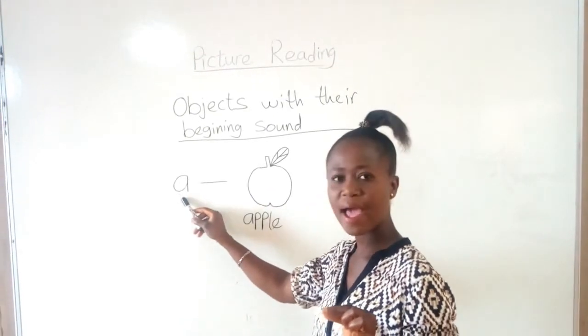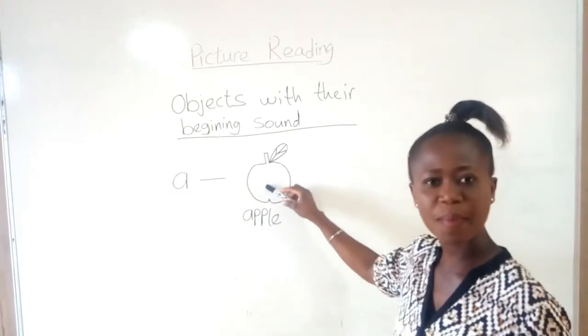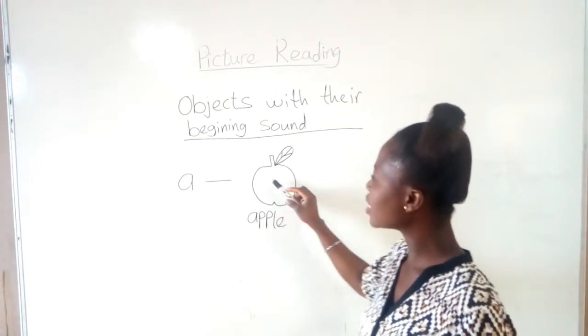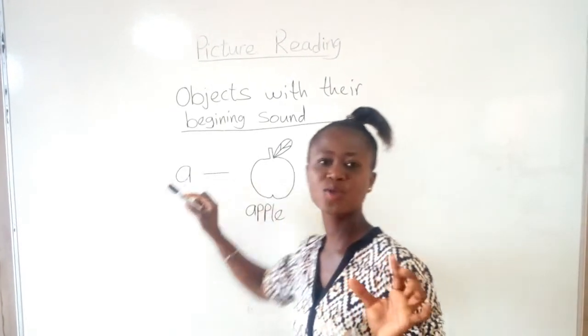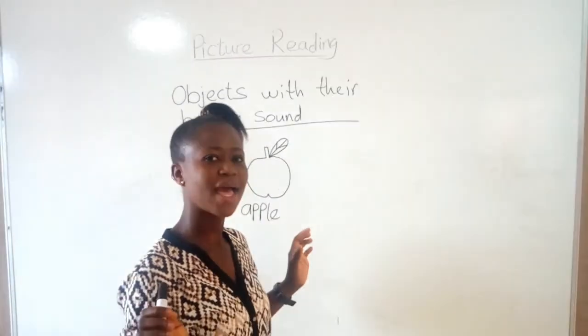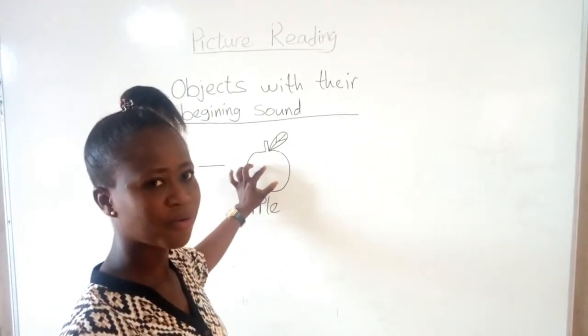So a, a, apple. So a is for apple. So the beginning sound for apple is a. Now, I want you to say with me. Say a, apple. A, apple. Very good.